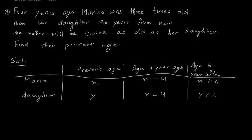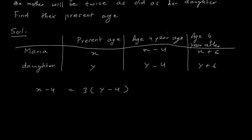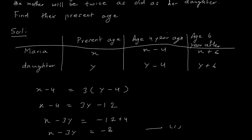Now what is given? Four years ago, Maria was three times older than her daughter. So four years ago, that means X minus 4, the age of Maria, is three times the age of her daughter, so X minus 4 equals 3(Y minus 4). Simplifying: X minus 4 equals 3Y minus 12, so X minus 3Y equals minus 8. This is equation 1.